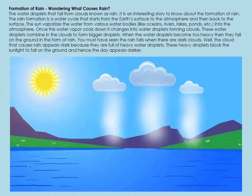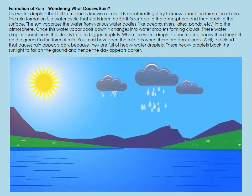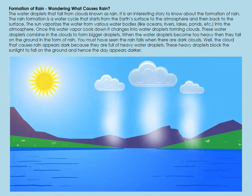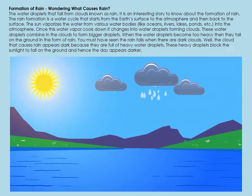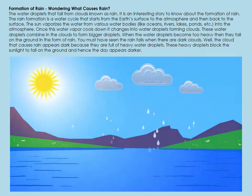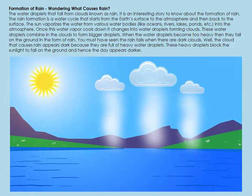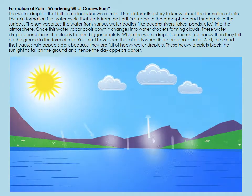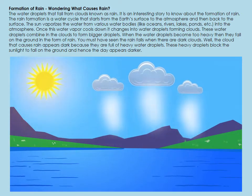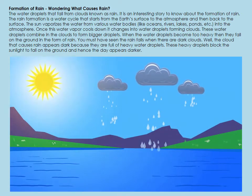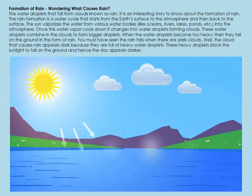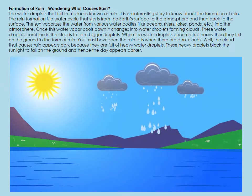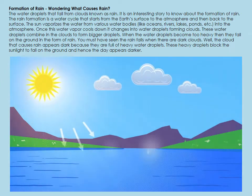You must have seen that rain falls when there are dark clouds. The cloud that causes rain appears dark because it is full of heavy water droplets. These heavy water droplets block the sunlight from reaching the ground, hence the day appears darker. The sun vaporizes the water, the water droplets form clouds, and then they become heavy and fall down as rain.